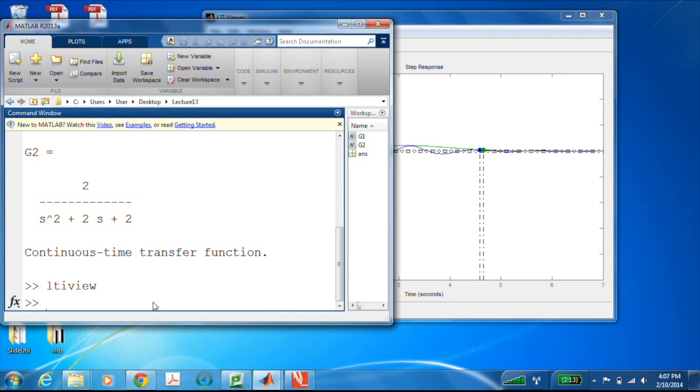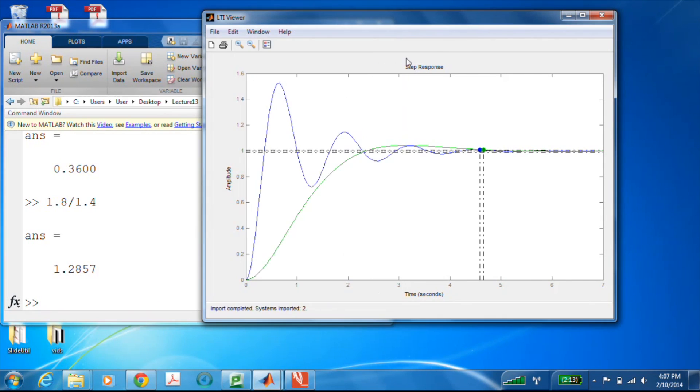Now let's look at the rise times. For the g1, our rise time was 1.8 over 5, or 0.36. For g2, the rise time was 1.8 over 1.4, or about 1.3. So 0.36 versus 1.3. Now we'll go to characteristics, rise time, and there they are. For the faster response, it's actually 0.241, which is a little bit off from 0.36, but not too bad.